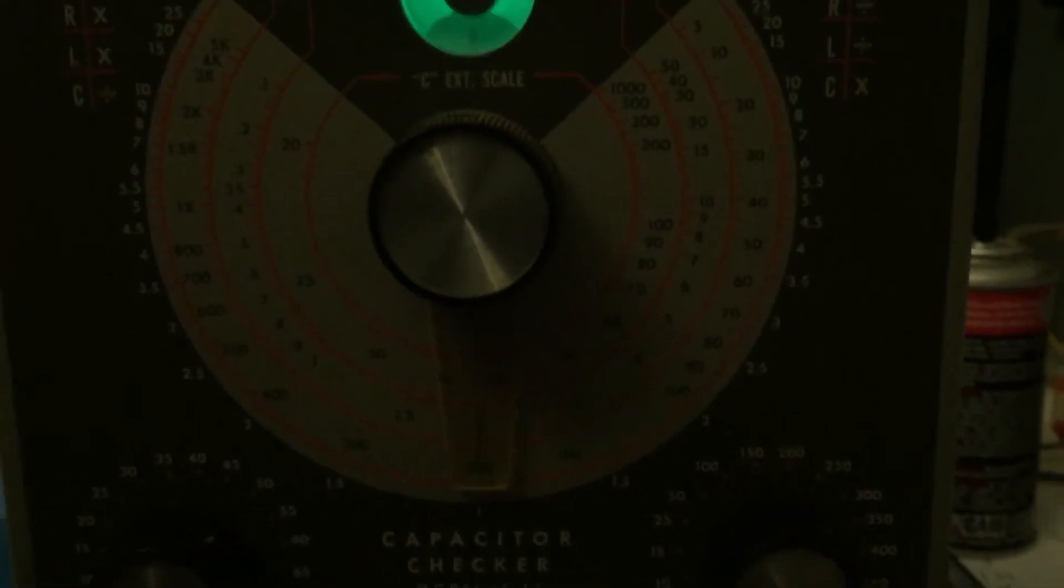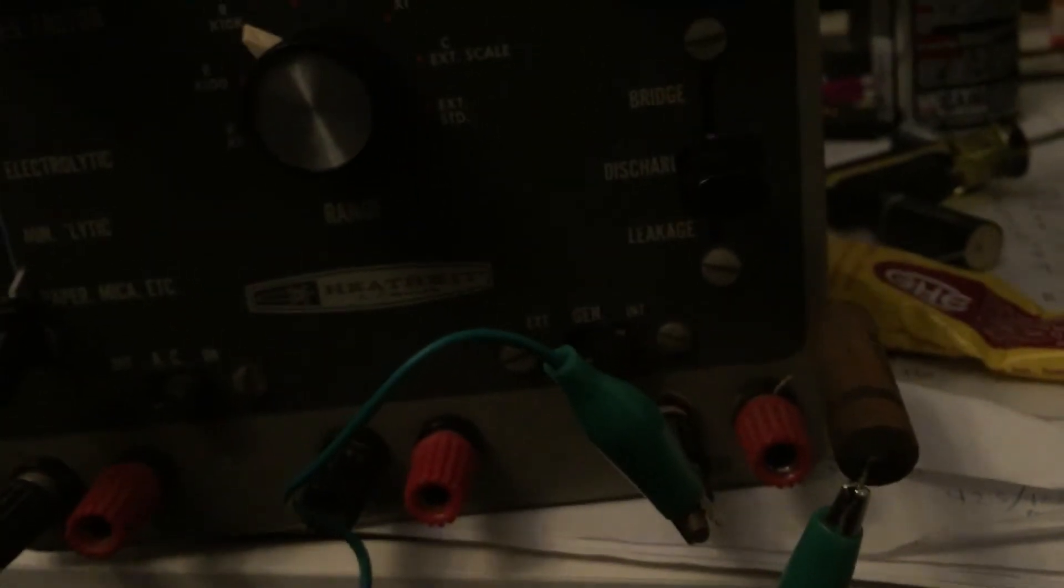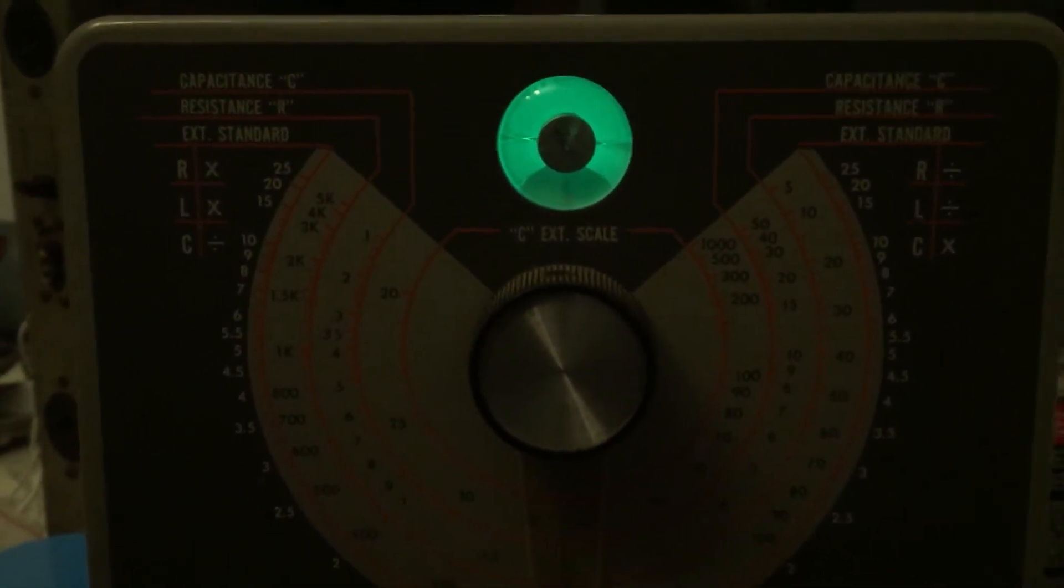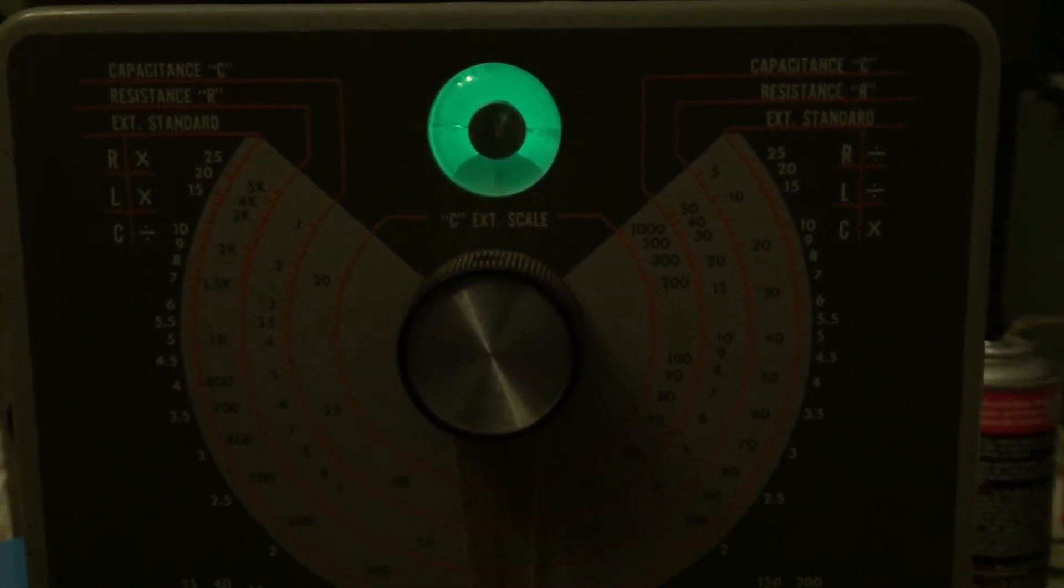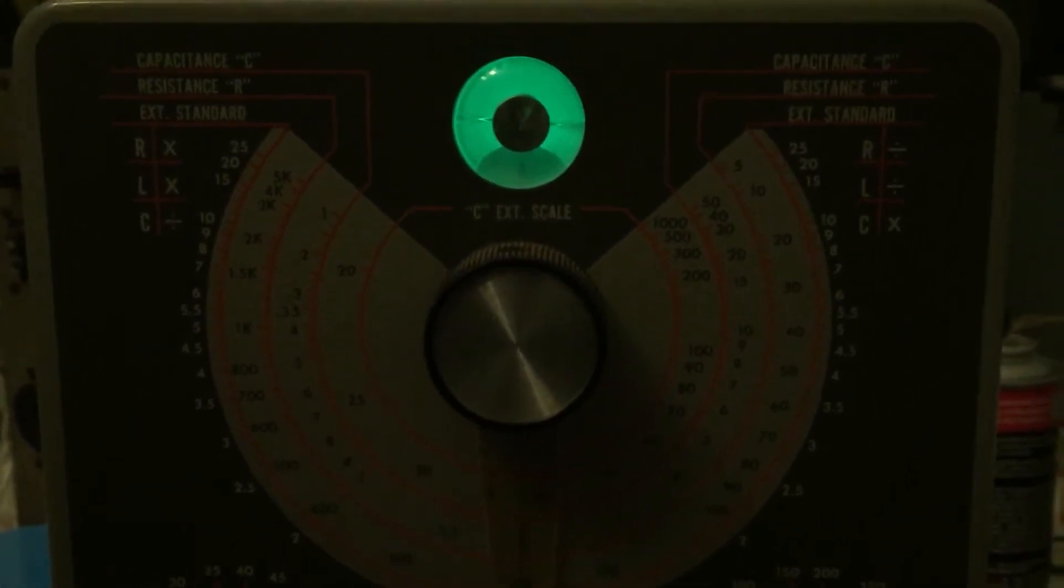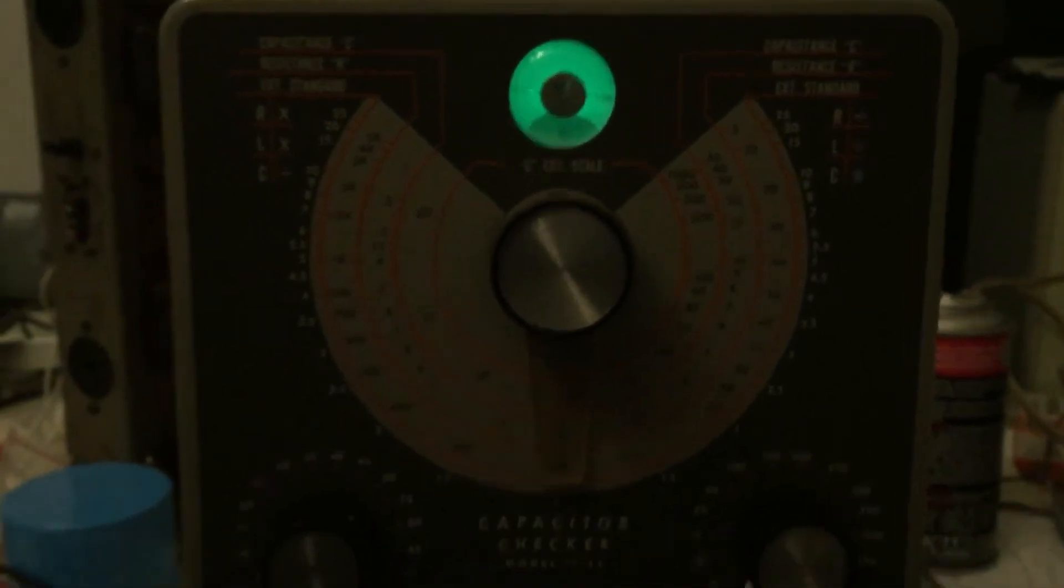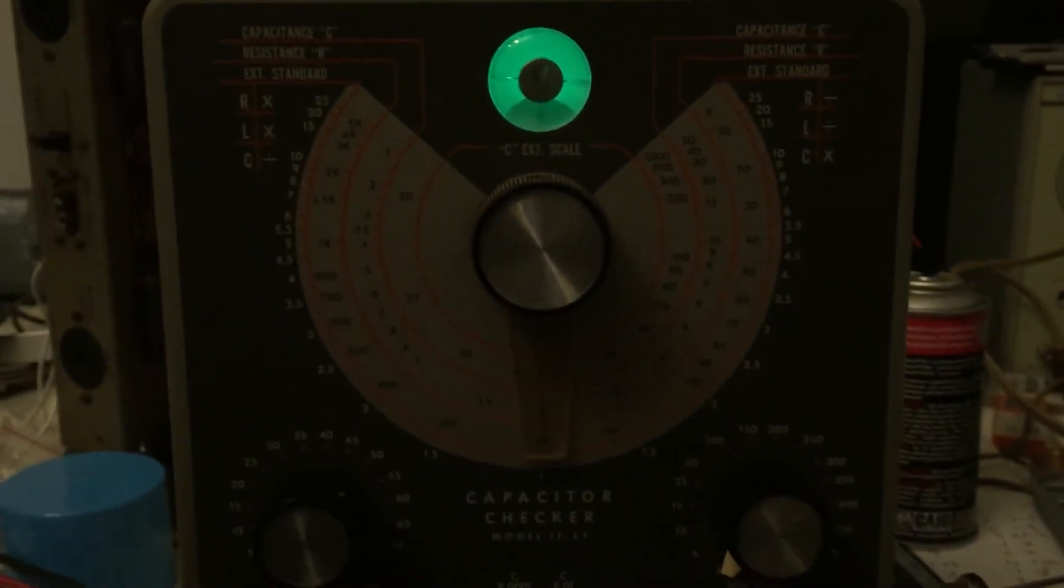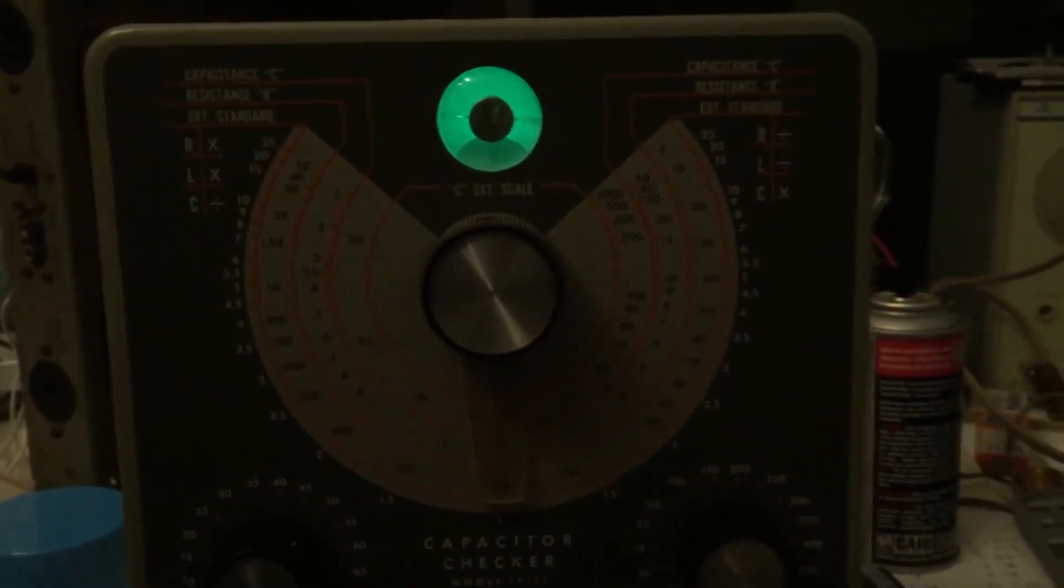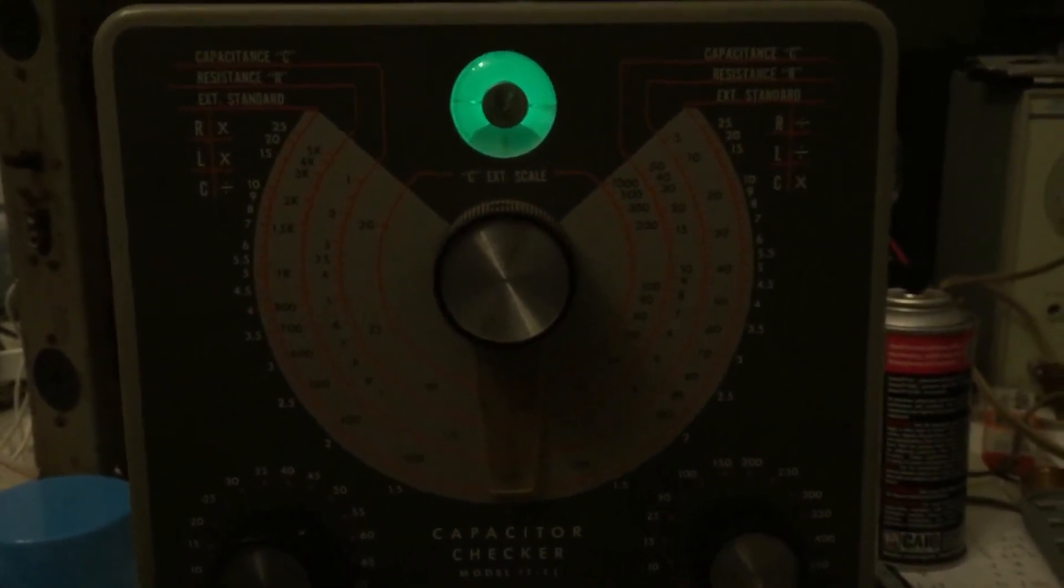However if you look at this capacitor on a capacitor checker you would find that it was slightly out of spec with regard to capacitance, but what you can't check on a moderate capacitor checker is the amount of DC voltage that has to run through it and how much that DC is going to leak through and treat the capacitor more like a resistor.